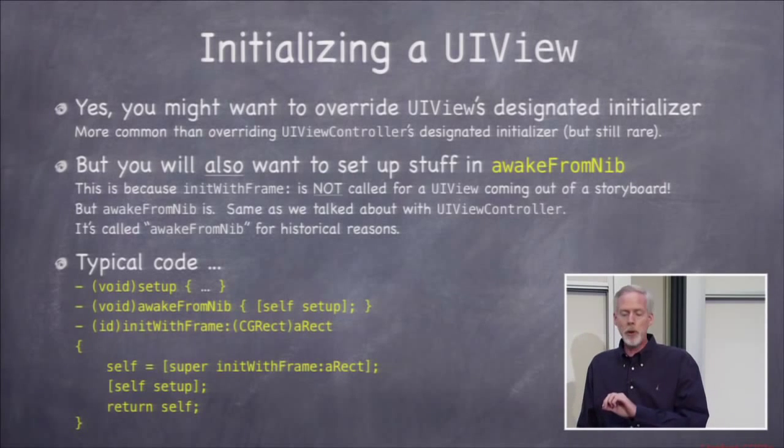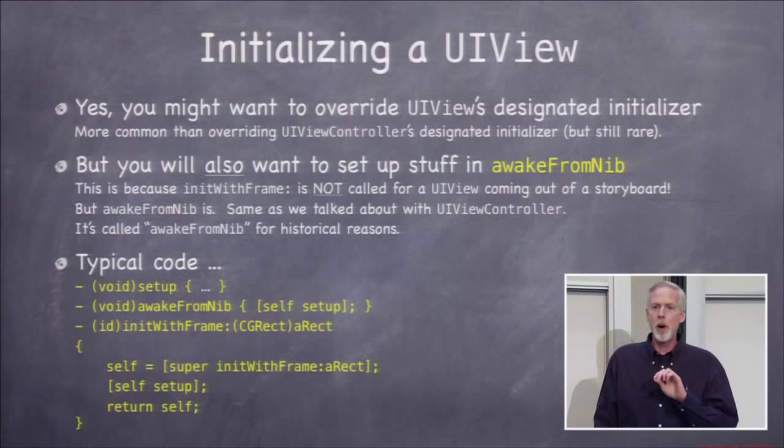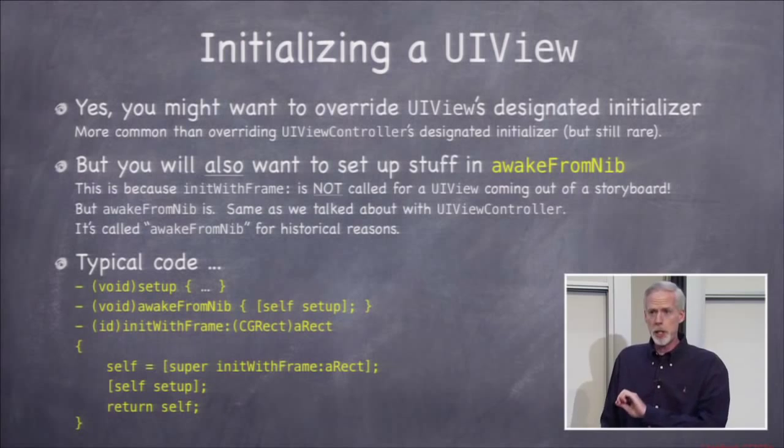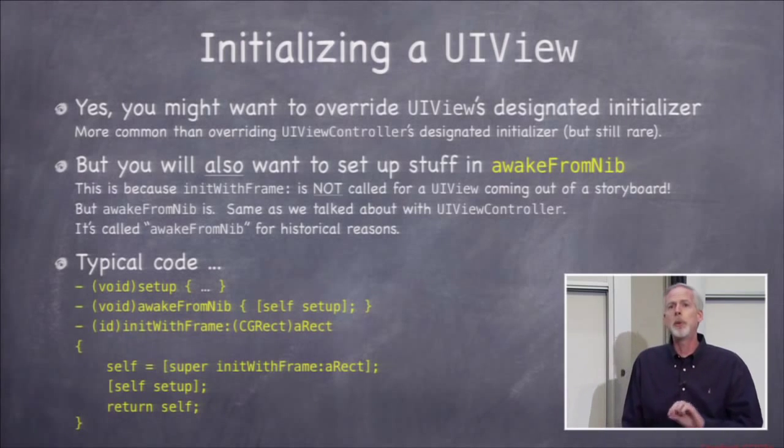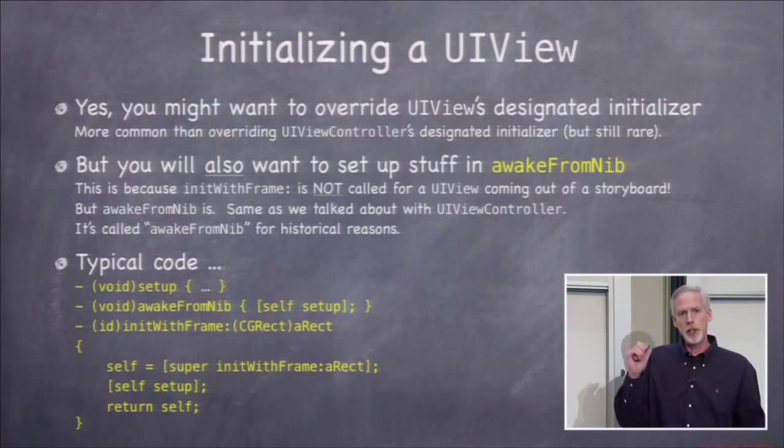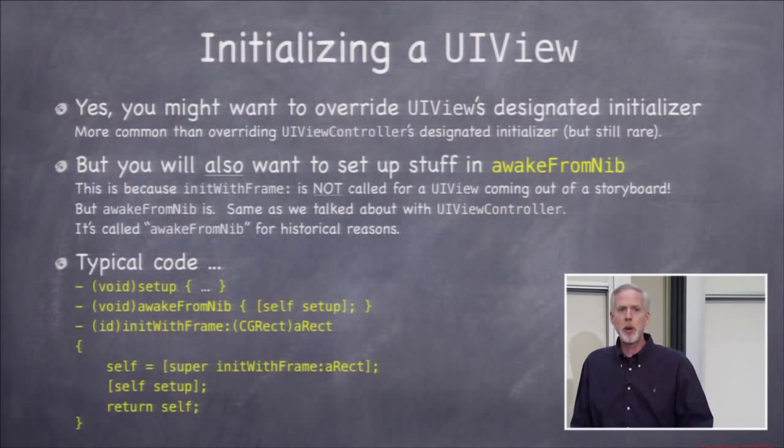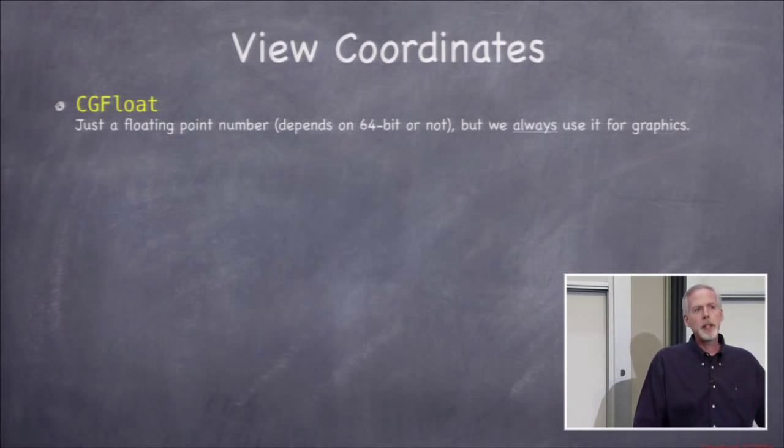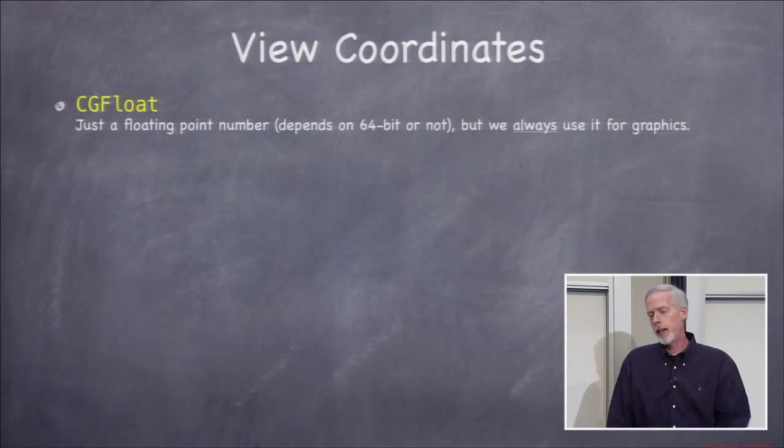So we do the same kind of thing we did with UIViewController, where we have some kind of setup method. You can call that setup thing whatever you want, and then you call it from awake from nib, and then you also call it from UIViews designated initializer, which is called initWithFrame, and that frame specifies where this view is in its superviews coordinate system. It's the positioning of this view. So that's what the code would look like, just like that. You put your initialization code in setup, and we'll do that in the demo, just so you see that. Now before I can talk more about UIView and drawing there and getting events, we've got to define a few types here.